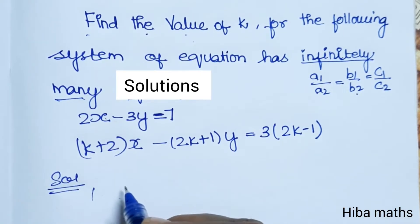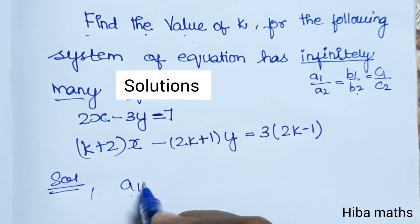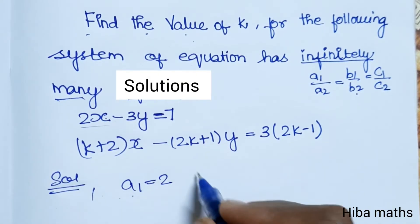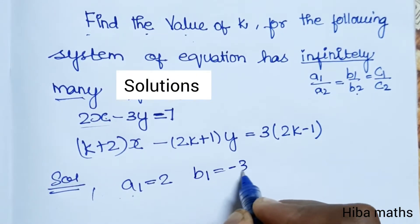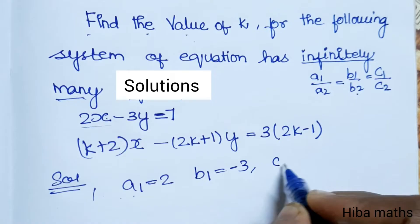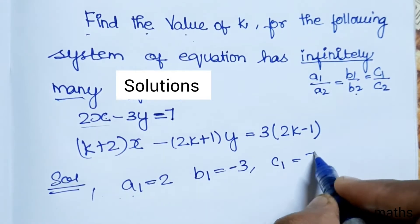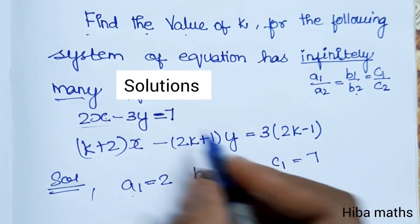From the first equation, a1 is the coefficient of x, b1 is minus 3, and c1 is 7.